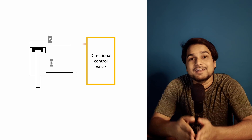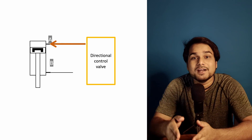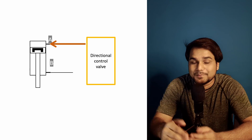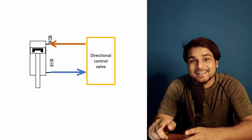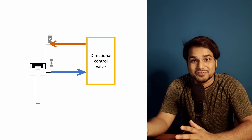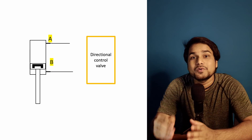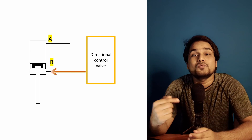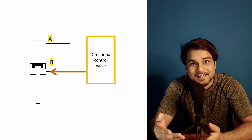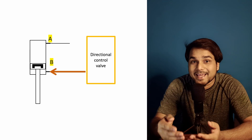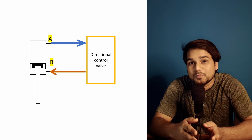The conclusion is: we have to make a selection of a pneumatic directional control valve which can direct the compressed air supply to one port of the pneumatic cylinder and at the same time direct the other port to exhaust. This same function we can achieve with a 5/2 directional control valve.